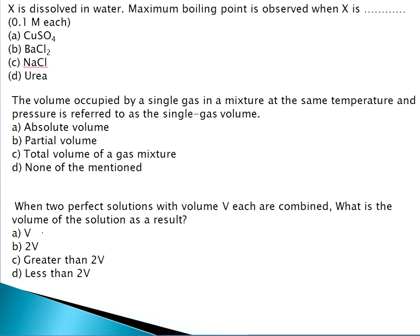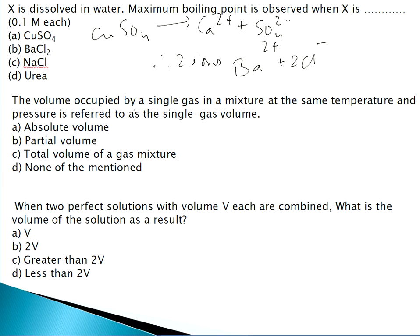Question 7: X is dissolved in water and the maximum boiling point is observed — when X is CuSO₄, BaCl₂, NaCl, or urea. CuSO₄ dissociates into Cu²⁺ and SO₄²⁻, giving 2 ions. BaCl₂ gives 3 ions: Ba²⁺ and 2 Cl⁻. NaCl also gives 2 ions. Since BaCl₂ gives the highest number of ions, the correct answer is BaCl₂.